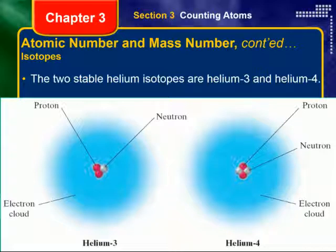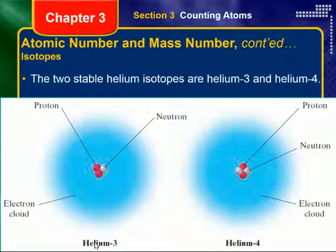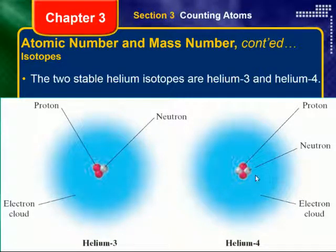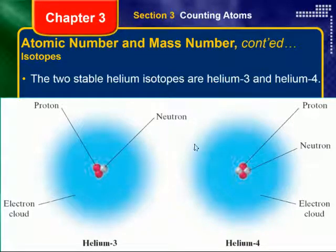Let's look at what helium-3 and helium-4 atoms actually look like. You can see the blue diffuse area — that's the electron cloud. Looking at the nucleus: helium-3 has two protons, which tells us it's helium, but only one neutron. Helium-4 also has two protons but has two neutrons. What makes them isotopes is the different number of neutrons, giving them different mass numbers. They're both still helium with the same chemical properties — it's just that helium-4 is a little more massive.